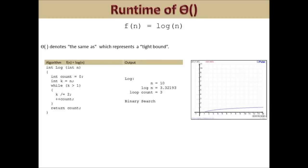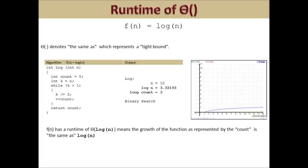Here we have a method that is log(n) in growth. N is the argument passed to the log method, and we enter 10 in our example. This algorithm is log(n) because it divides n into smaller parts each time it goes through the loop. K is equal to n, and then k is divided by 2 while k is greater than 1. Once k equals 1, our results print. The method only needed to go through the while loop three times before the condition was met. The notation is theta(log n), and in the output, log of n is 3.32 and the loop count is 3 — basically the same.